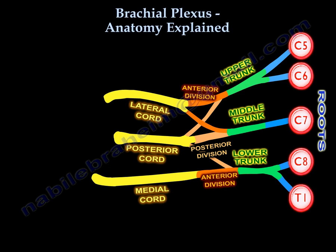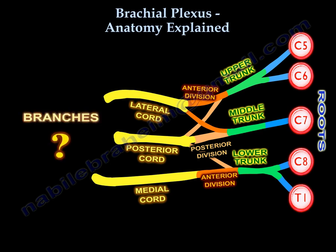To summarize: we've seen the roots from C5 to T1, the trunks — upper, middle, lower — the divisions — anterior and posterior — and the cords — lateral, posterior, and medial. But we haven't yet covered the branches.